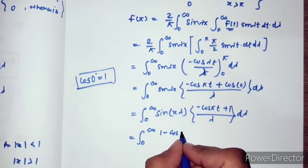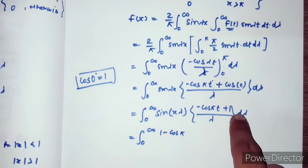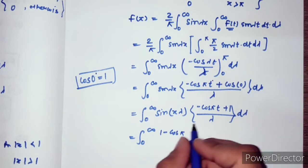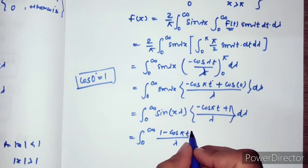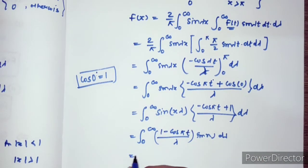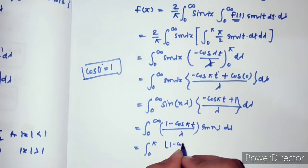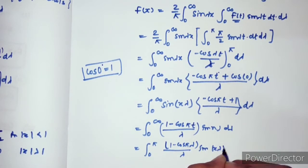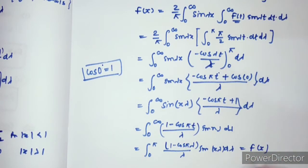This gives (1 minus cos(λπ)) upon λ times sin(xλ) dλ. Writing this out, from 0 to infinity: (1 minus cos(πλ)) upon λ times sin(xλ) dλ. This is the proof of f(x).